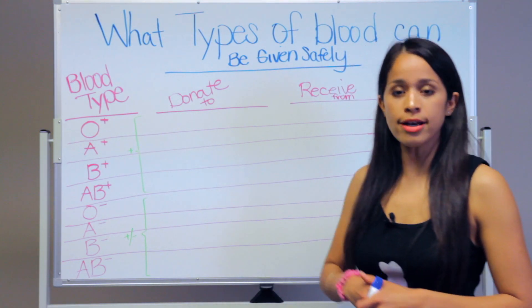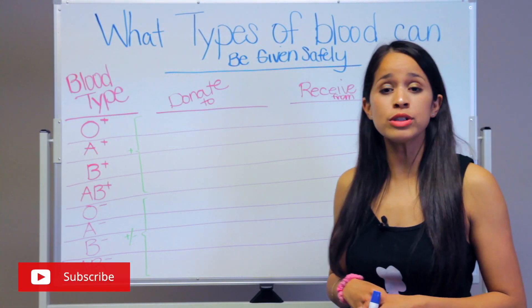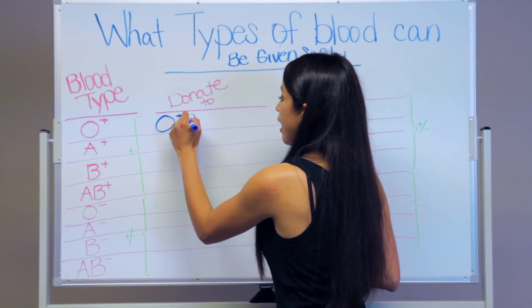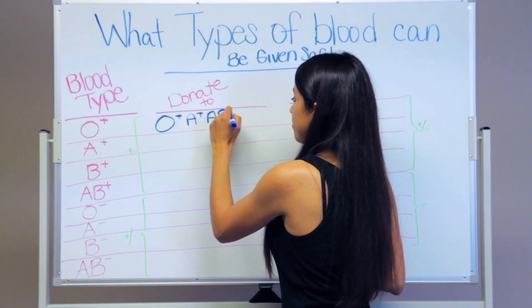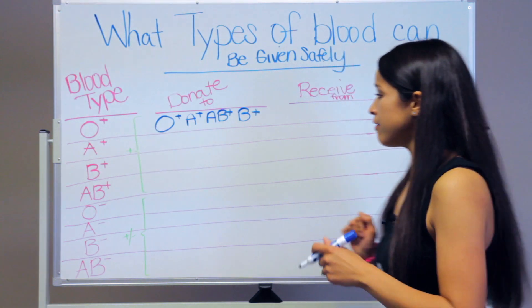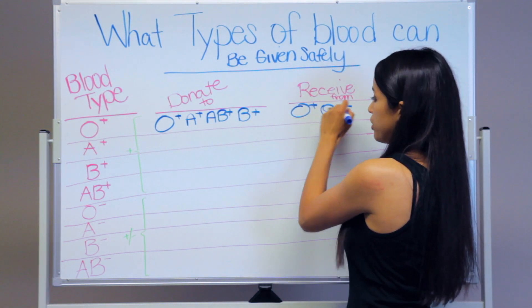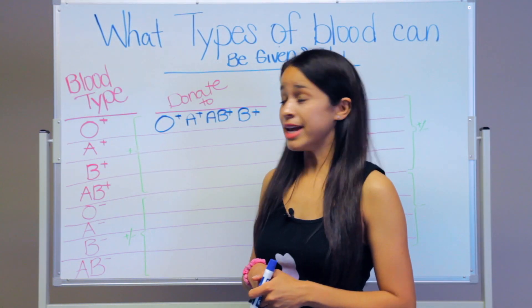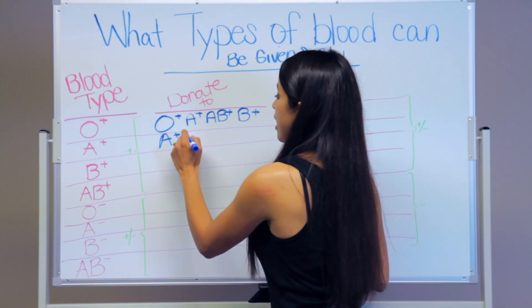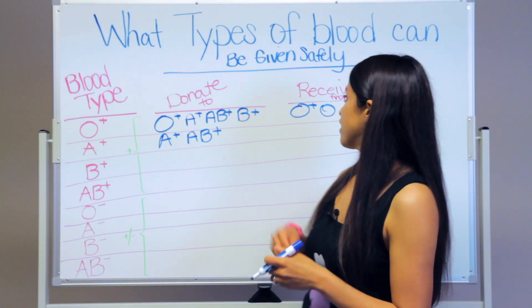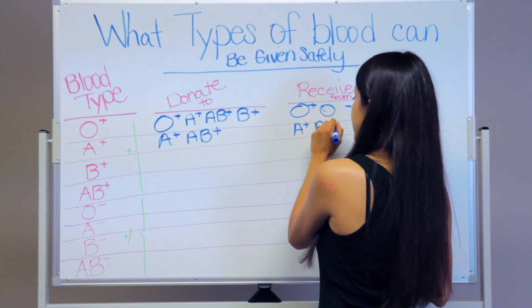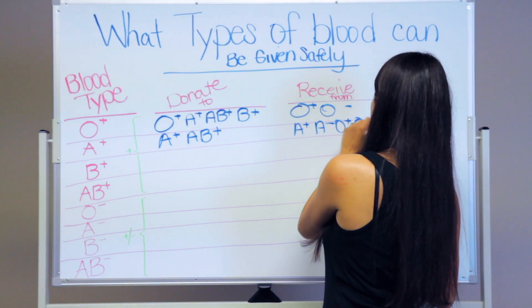O positive can donate blood to O positive, A positive, B positive, and AB positive. If you're O positive and need to receive blood, you can receive O positive and O negative. For the A positive patient, they can donate to A positive and AB positive. They can receive blood from A positive, A negative, O positive, and O negative.